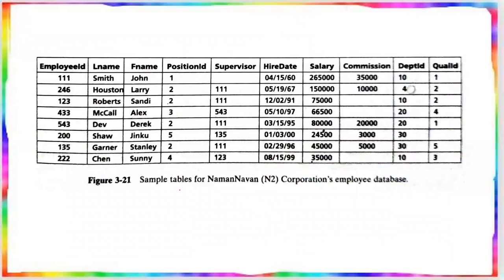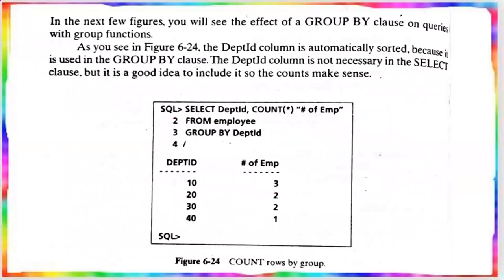Let's take an example using the employee database with the GROUP BY clause. In figure 6.2 from the chapter, the example shows how to count rows by grouping. The department ID column is automatically sorted in the output as 10, 20, 30, 40 — it is automatically sorted in ascending order.